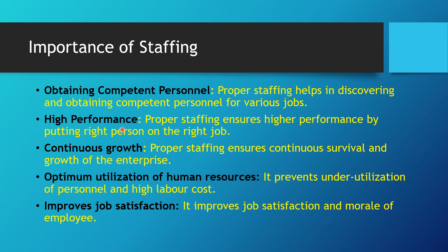The next point is high performance. Staffing ensures higher performance by putting the right person at the right job. For example, teachers who are proficient in business studies are the right people to be appointed in the commerce department. Putting a physics teacher to teach business studies would be a blunder. Higher performance can only be expected when people are placed at the right job with the required skill set.